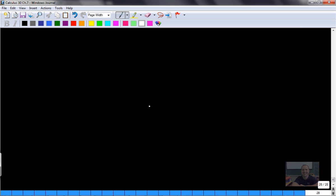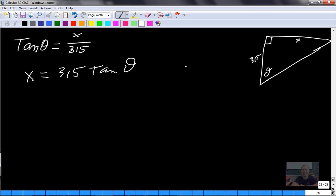So from here, we need to find some kind of relationship. We're talking about this angle and 315 and X. The relationship between the angle, 315, and X is what? Remember, this 315 is perpendicular to the shore, so we do have a right triangle. So tan of theta equals opposite over adjacent, which is X over 315.